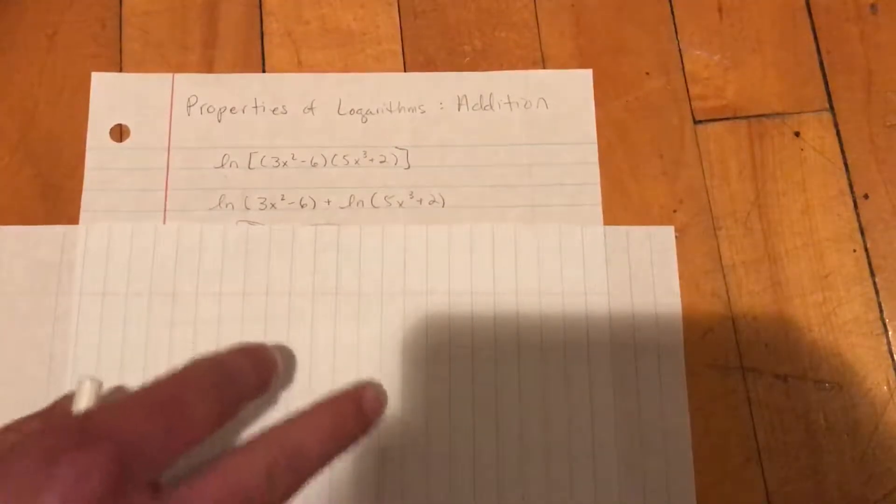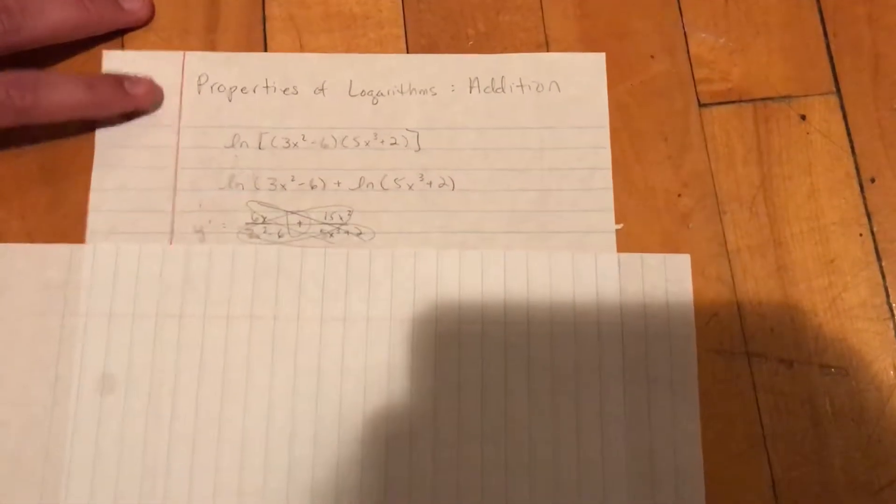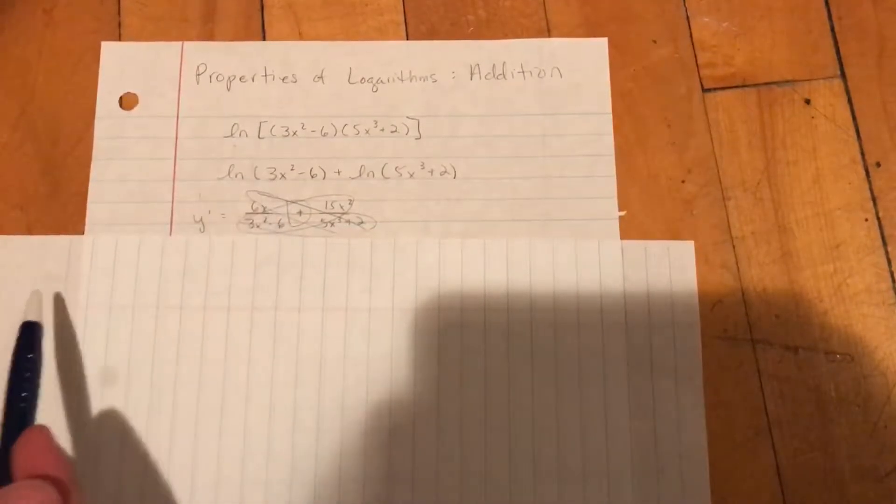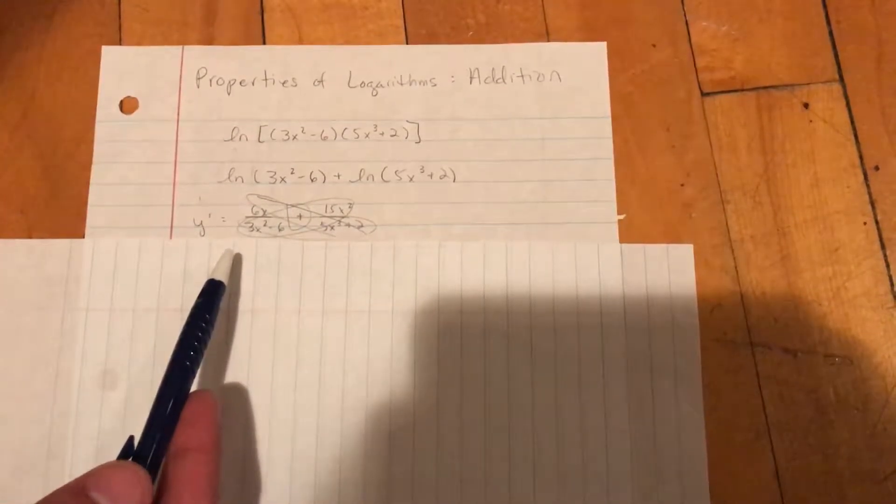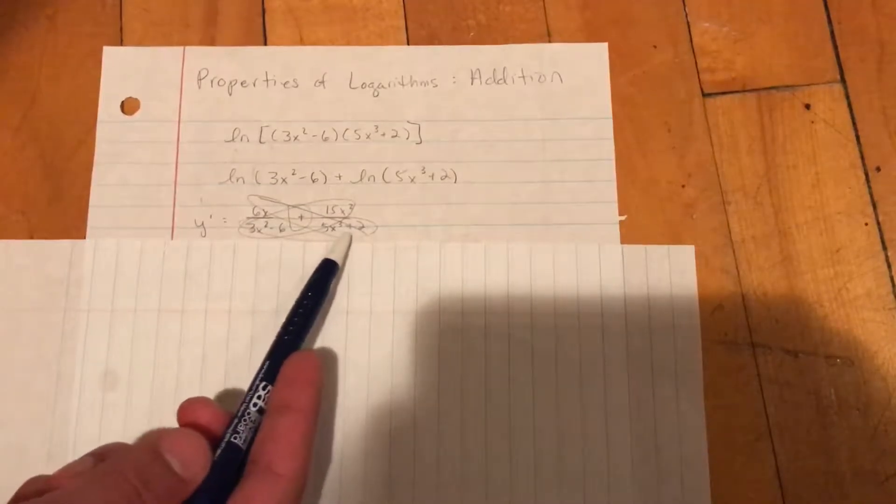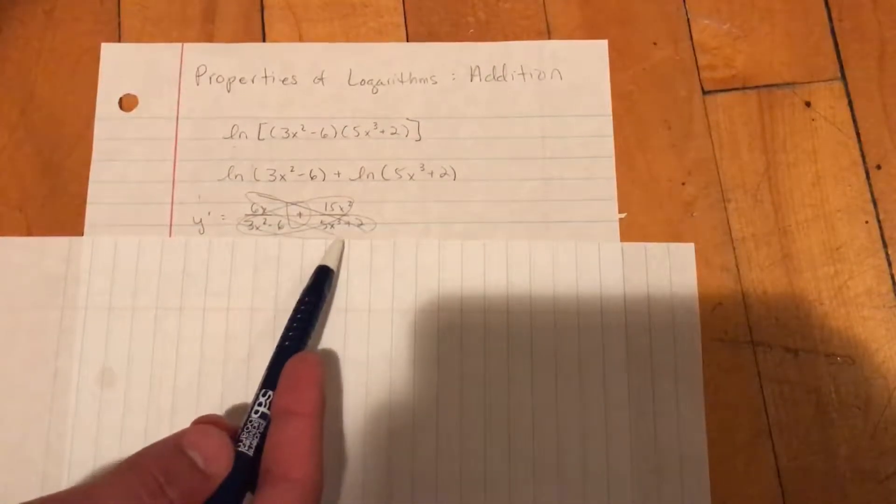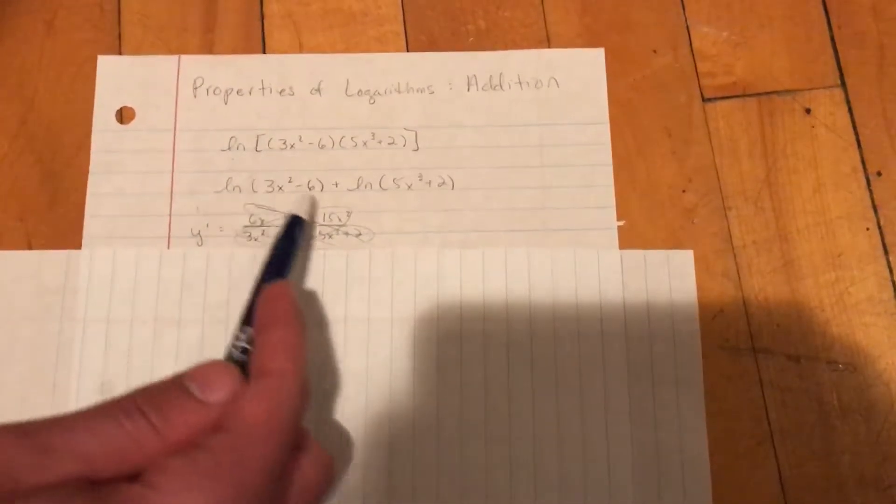And from here you go ahead and derive each and then add them at the very end. In this case for the first one we end up with 6x over 3x squared minus 6 plus 15x squared over 5x cubed plus 2. This one goes to this one and this one goes to that one.